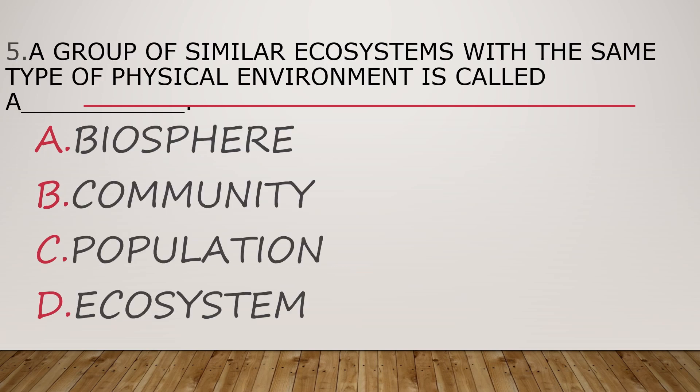Number five. A group of similar ecosystems with the same type of physical environment is called a blank. A. Biosphere. B. Community. C. Population. D. Ecosystem.